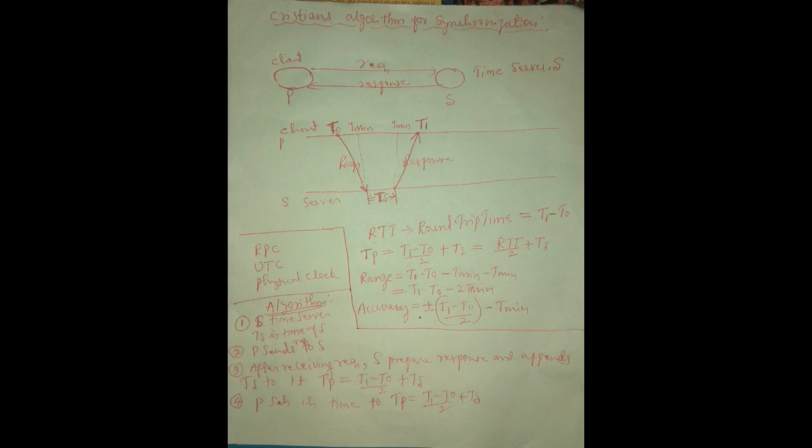Here, a client P sends a request to the time server S. The time server reads the client request and gives the response back to the client. That response allows the client to set its clock. The time server provides accurate time to the clients associated with it.